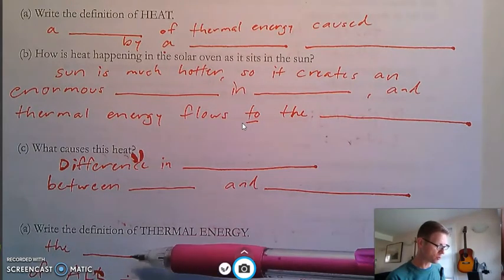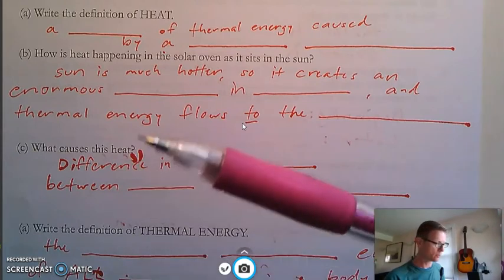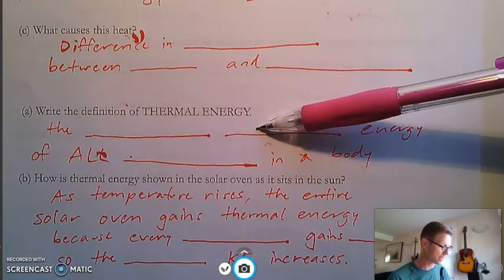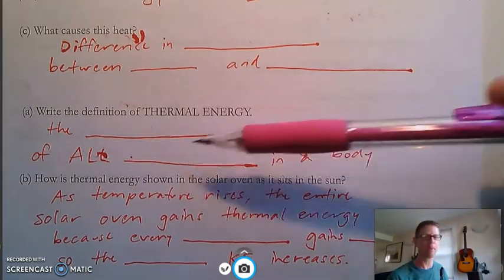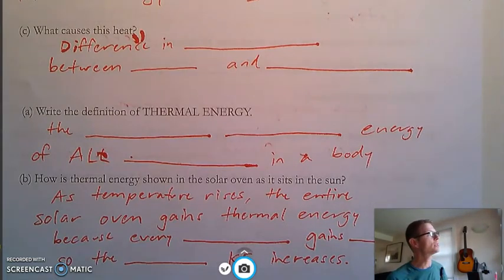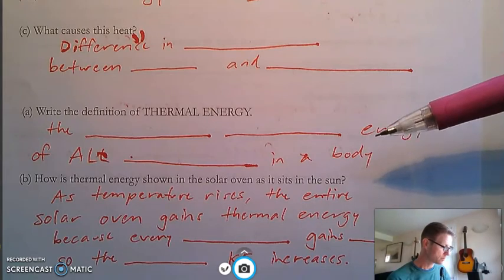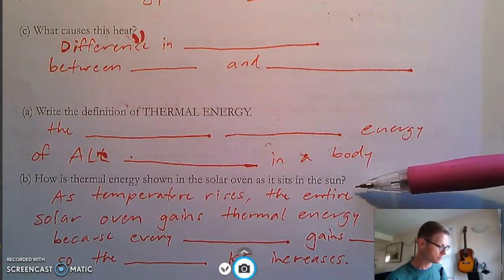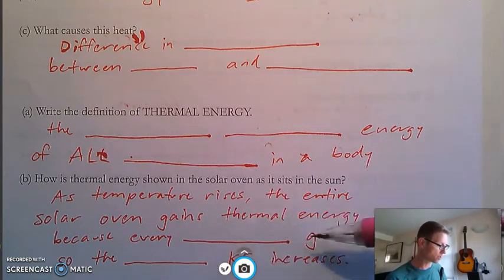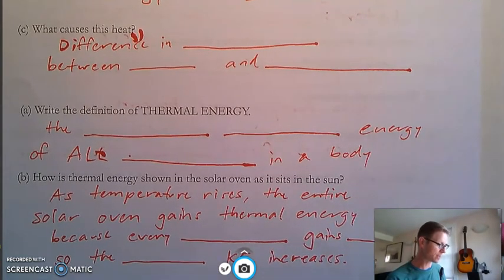Definition of thermal energy is the total. This word's really important. Thermal energy is the total kinetic energy of all of the molecules in a body. And remember, I'm saying a body because I'm looking at the clouds, clouds are a body, the air that's moving through the trees right now. It's kind of a windy day. That's a body. As it sits in the sun, the entire solar oven is gaining thermal energy because every molecule gains kinetic energy. Think about it. Molecules are moving around more actively and vigorously.